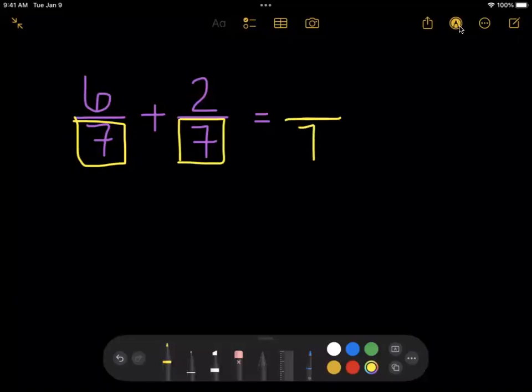We're going to keep seven as the denominator for these two fractions. We're not going to add those two numbers together. We're not going to add seven plus seven, and the reason we're not going to do that is because the size of the pieces that we're adding together has not changed, but what we are going to do is we're going to add the two numerators together.